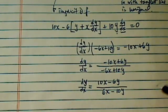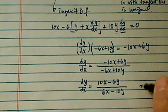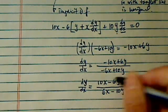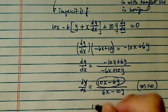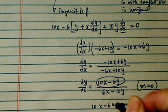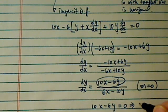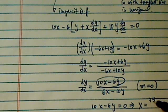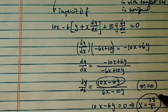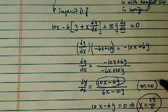Since we're looking for a horizontal, which means the slope equal to 0, I'm going to set the top equal to 0. I have 10x minus 6y equal to 0, which gives me an explicit expression that x is equal to 3y divided by 5. This is for the slope.